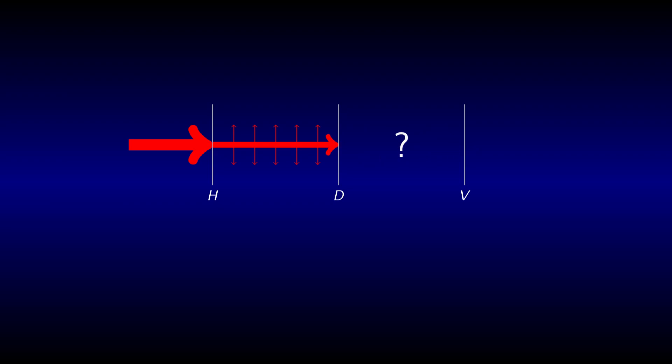Now we add a third polarization filter in the middle which has a diagonal orientation. What happens now? To find out, let's go to a quantum description.